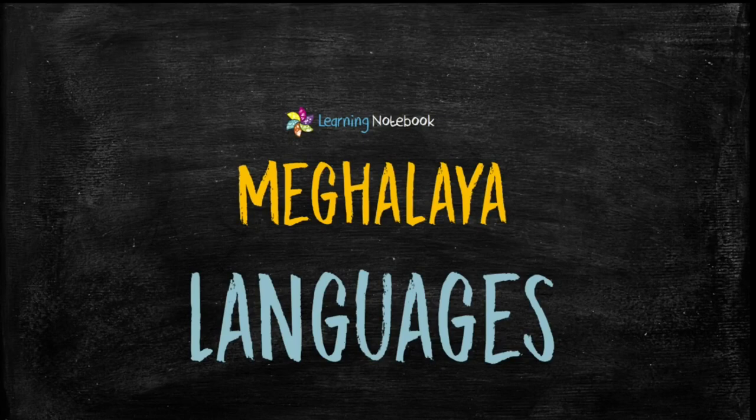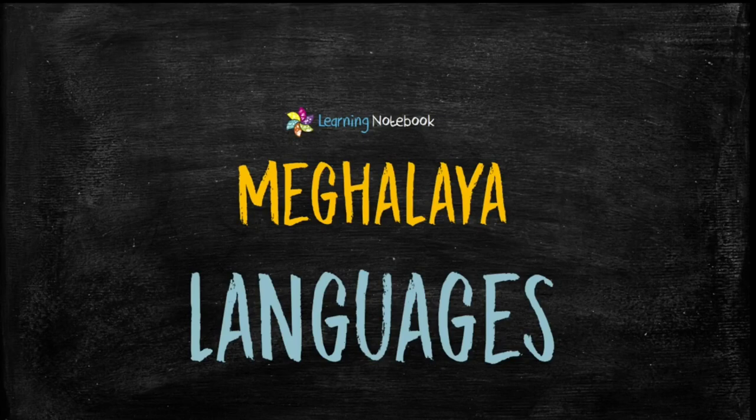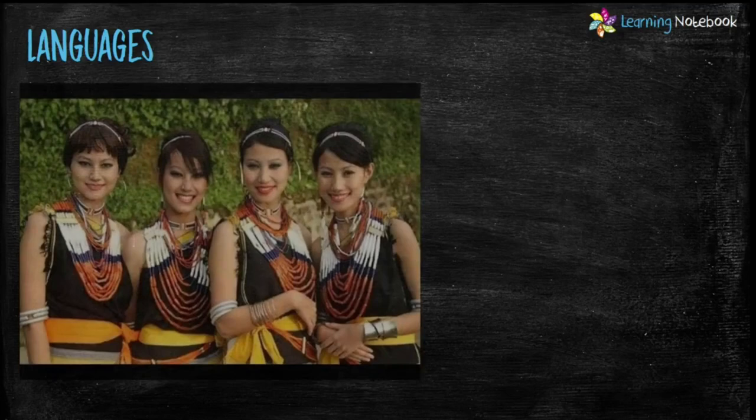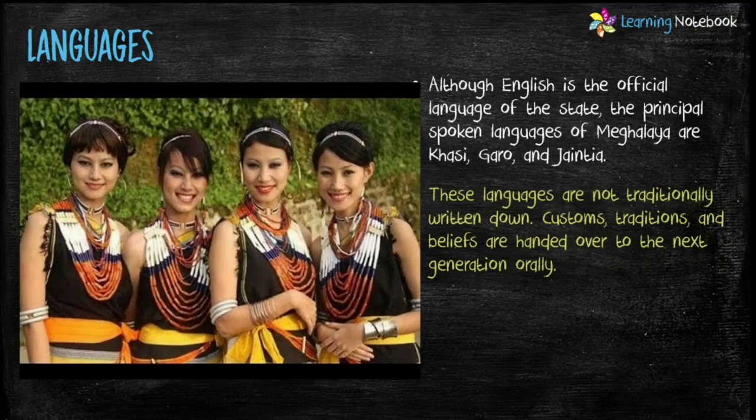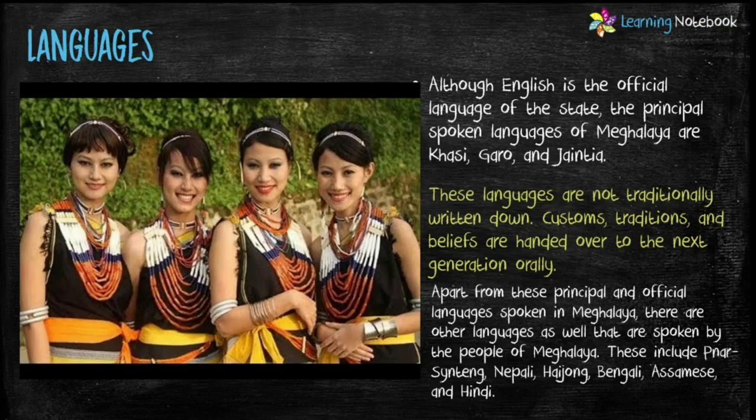Hindus are the largest religious minority in Meghalaya with 11% of the state's total population. Now let's learn about the languages of Meghalaya. English is the official language of the state. The principal spoken languages of Meghalaya are Khasi, Garo and Jaintia.